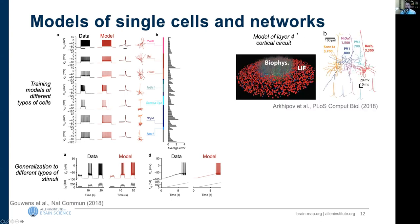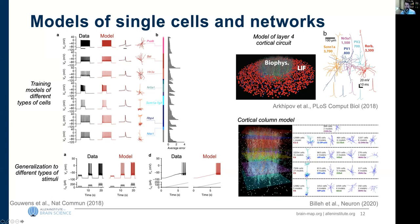These models are used as components of large-scale network circuit models. A layer 4 cortical circuit model using a few parvalbumin and excitatory types, representing much of mouse V1, was published in PLOS Computational Biology. A full cortical column model spanning all layers with multiple inhibitory classes and excitatory types in different layers was recently published in Neuron.